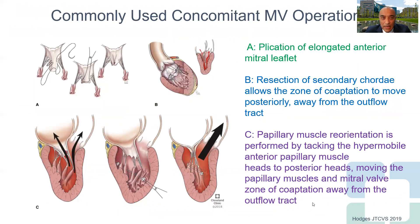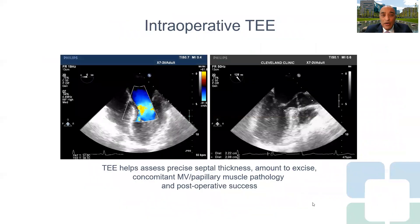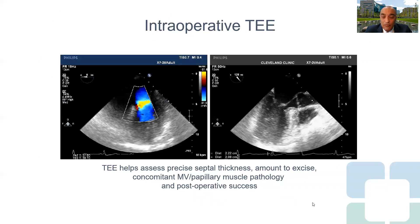Common mitral valve operations we perform at the Cleveland Clinic: panel A is plication of the elongated anterior mitral leaflet. If there are secondary abnormal chordae, we resect those to allow the zone of coaptation to move posteriorly away from the outflow tract. Panel C shows a surgical procedure we do fairly often — tacking the hypermobile papillary muscle heads posteriorly away from the zone of coaptation, thus relieving outflow tract obstruction. Intraoperative TEE is important to precisely guide the extent of myectomy and ensure adequate relief of dynamic outflow tract obstruction.